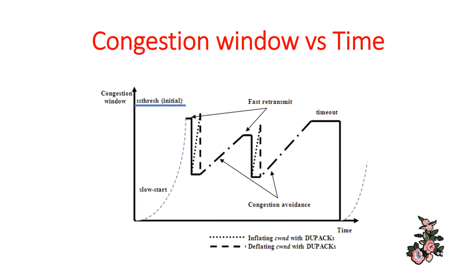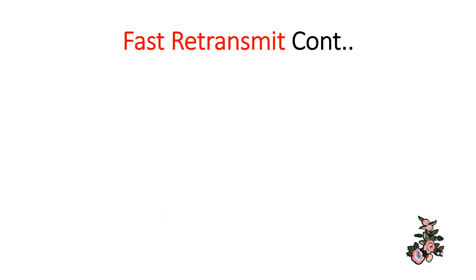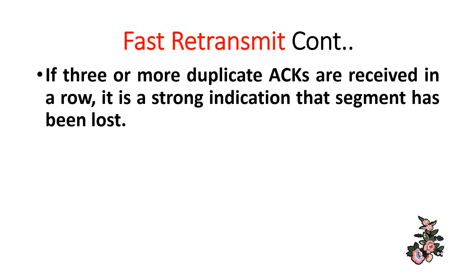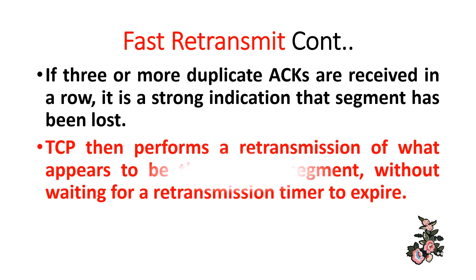A graph of congestion window versus time shows the stages of slow start, fast retransmit, timeout, and congestion avoidance. If three or more duplicate ACKs are received in a row, it is a strong indication that a segment has been lost. TCP then performs a retransmission of the missing segment without waiting for a retransmission timer to expire.